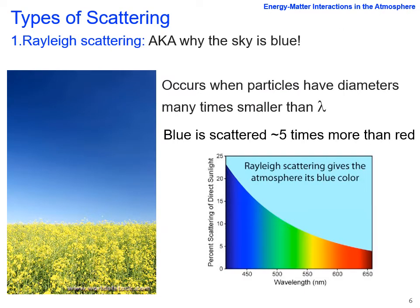There are three kinds of scattering. The first is Rayleigh scattering, which occurs when particles have diameters many times smaller than the wavelength of interest. Looking at the visible spectrum, the magnitude of Rayleigh scattering is much higher in the blue than it is in the red. And this is the reason why we get blue skies.